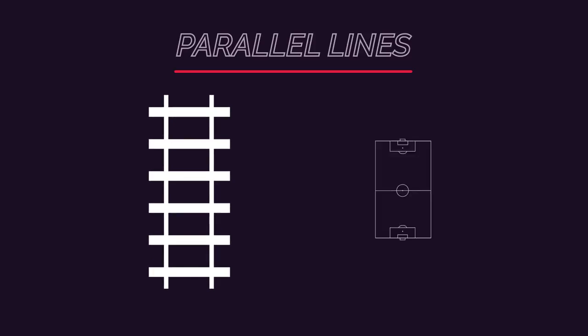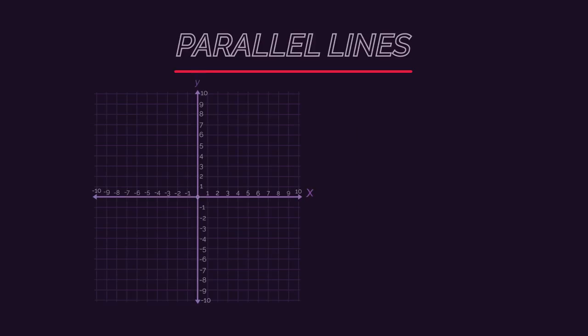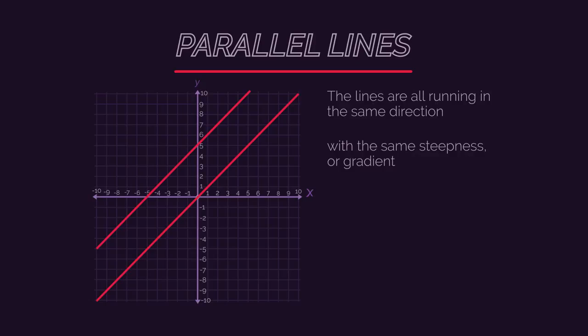Parallel lines are found everywhere. You see them on train tracks, sports pitches, pictures, rows of seats in a stadium. And on a graph, they look like this. The lines are all running in the same direction with the same steepness or gradient. Parallel lines have the same gradient.